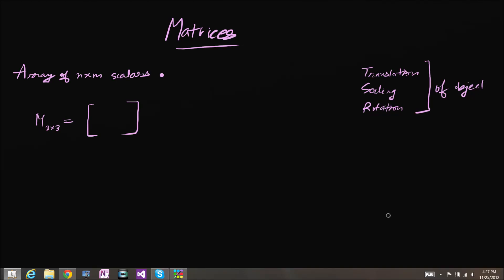This is the Open Enzo and today we're going to be covering matrices. Matrices is the plural and matrix is the singular. A matrix is an array of n by m scalars. Let's say we have a matrix M right here which is a 3 by 3 matrix, which means it's going to have 3 rows and 3 columns.